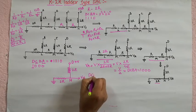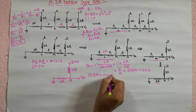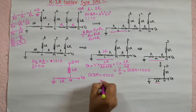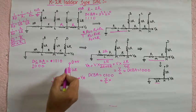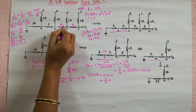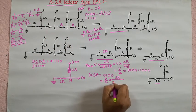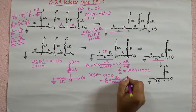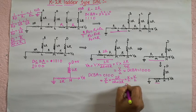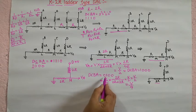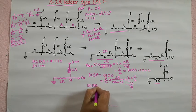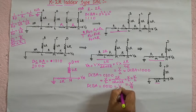For DCBA = 0000, output is 0. For DCBA = 0100 (second MSB, C is high), the equivalent voltage at node L gives V/2 feeding through resistors, resulting in output V/4. Similarly, when DCBA = 0010, the output is V/8, and when DCBA = 0001 (LSB only), the output is V/16.